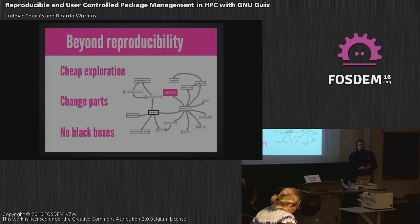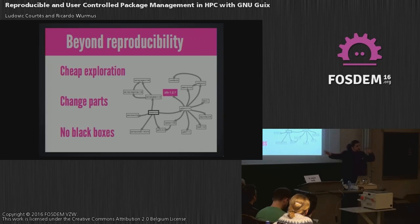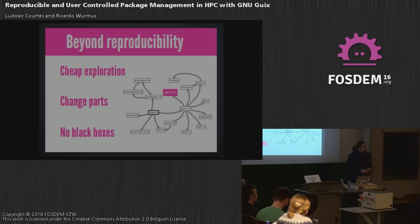Reproducible in itself is not a goal unto itself. We do this because we want to enable reproducible science. The first step is setting up an environment equivalent to what somebody else has done. Then you can experiment and explore. The steps after reproducing the environment are just as important as reproducing it — we want to be able to change individual parts and see what effect they have on the performance of the system.